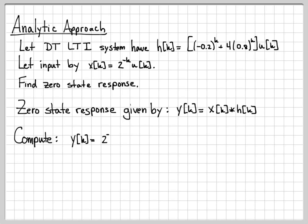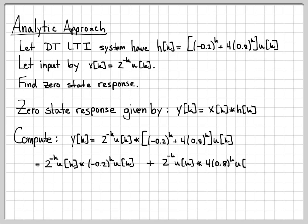So we need to compute y(k) = x(k), which in this case is 2^(-k) u(k), convolved with h(k). I know that I can distribute the convolution, because we've shown that discrete time convolution is distributive. So I can write it as two different terms: x(k) convolved with this first part, plus x(k) convolved with this second part. I can think of these as just two distinct terms that I need to compute.